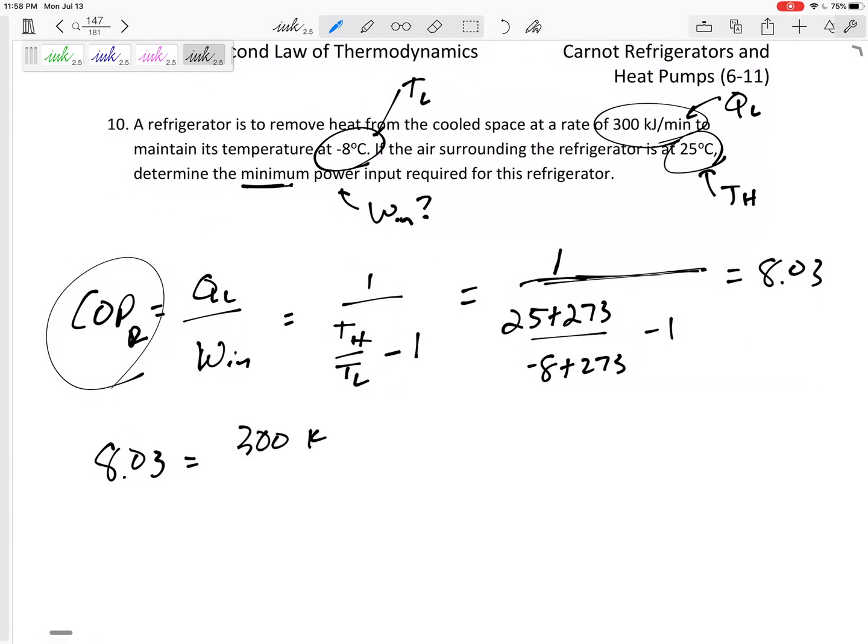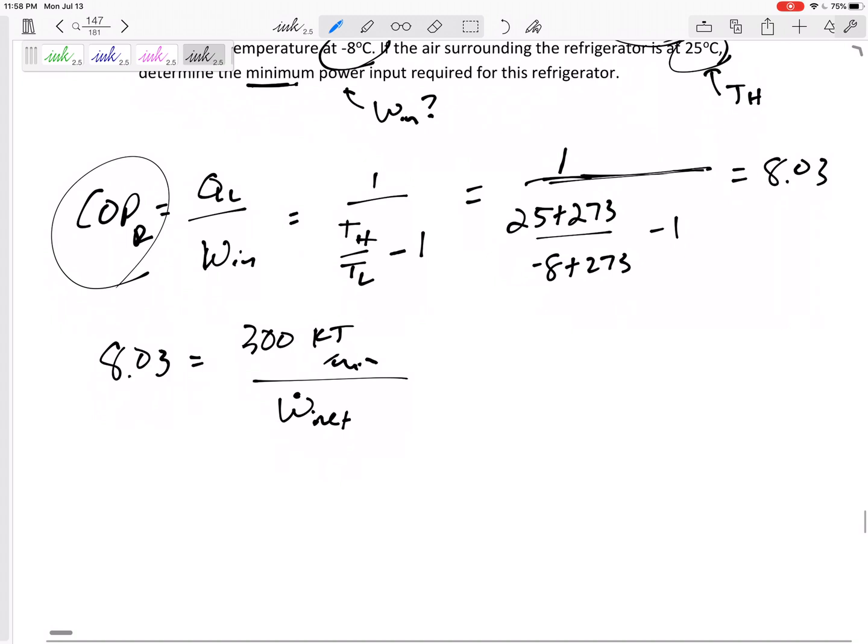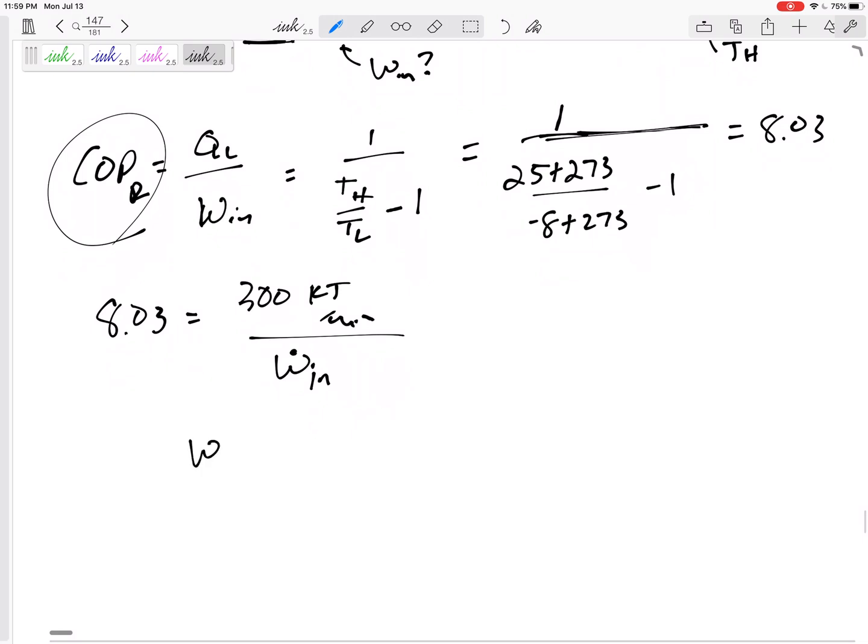So 8.03 equals QL which I knew, 300 kilojoules per minute, and then let's find the net work in. I don't have to do net for heat pump refrigerators. The power in would be 37.36 kilojoules per minute. If I want to convert minutes to seconds, divided by 60: 0.623.